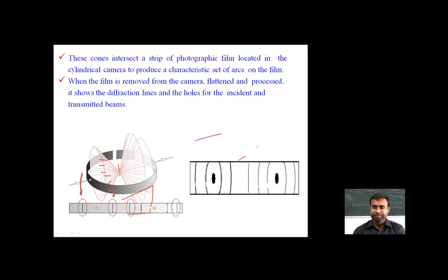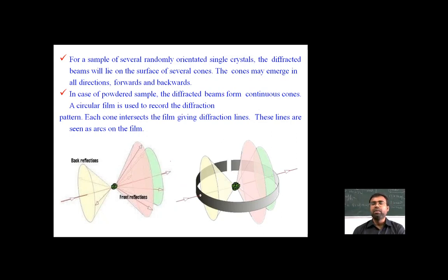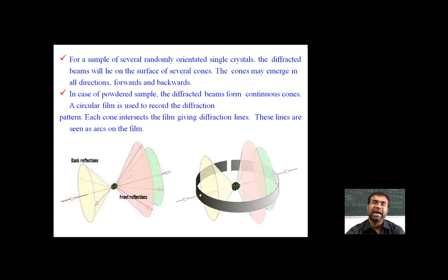For a sample of several randomly oriented single crystals, the diffracted beams lie on the surface of several cones, which may emerge in all directions — forward and backward. In the case of an ordered sample, the diffracted beams form continuous cones. A circular film is used to record the diffraction pattern; each cone intersects the film giving a diffraction line, seen as an arc on the film.